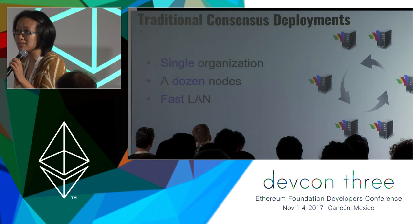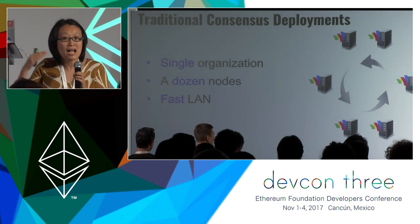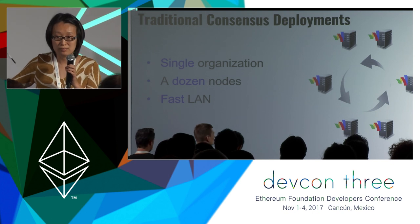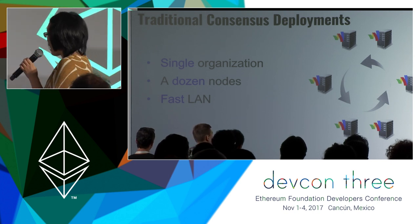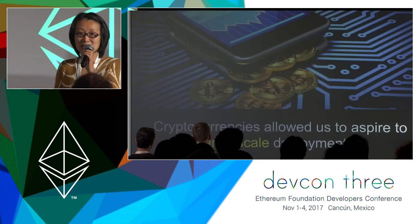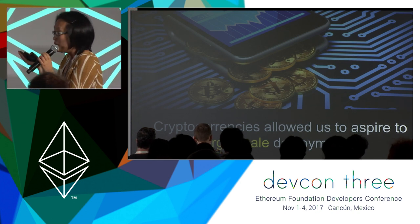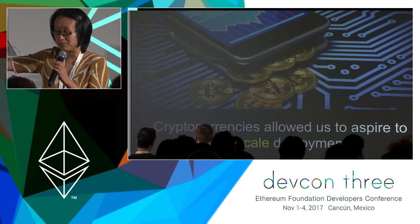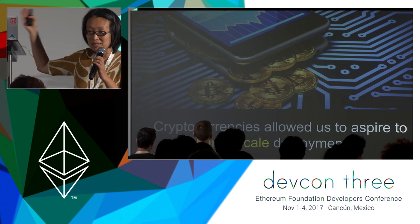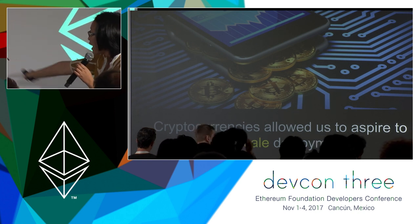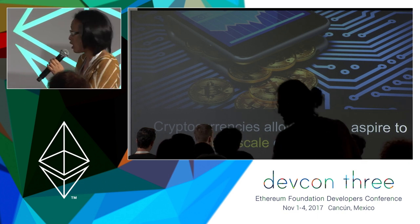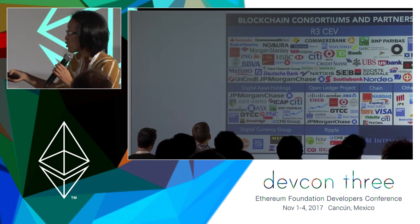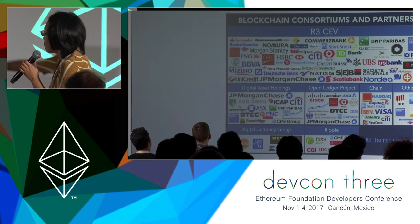Traditionally, when we talk about distributed consensus the scenario that comes to mind is a single company with five to ten nodes interconnected with a fast local area network — small scale. What is really amazing is that with cryptocurrencies like Bitcoin and Ethereum, we now have empirical evidence that distributed consensus is actually possible on a really large scale on the internet. Banks and large industry consortia are super excited about this and want to replicate this success to the permissioned setting — consortium blockchains.